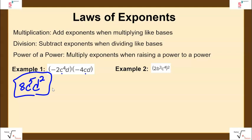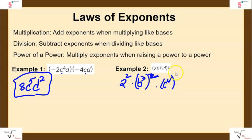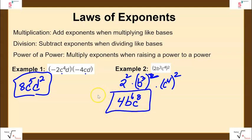Example 2: we have an exponent of 2 on the outside of the parentheses, telling us we raise everything inside to the 2nd power. So we have 2 squared, times b to the 3rd raised to the 2nd power, times c to the 4th raised to the 2nd power. Simplifying: 2 squared is 4; b cubed raised to the 2nd power means we multiply the exponents, giving b to the 6th; and c to the 4th times 2 is c to the 8th. So the answer is 4b to the 6th c to the 8th.